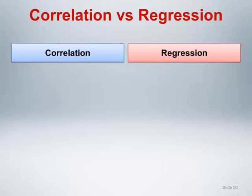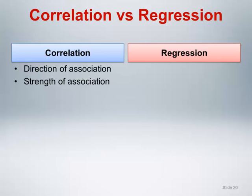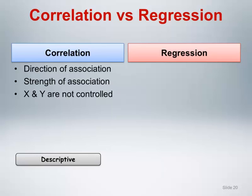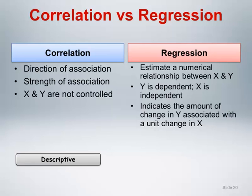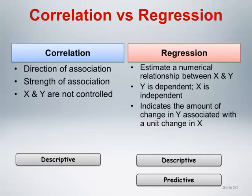We have now discussed both correlation and simple linear regression. Remember that correlation quantifies the direction and strength of the linear association between X and Y, where X and Y are not controlled variables and occur naturally, and the goal is primarily descriptive in nature. Regression is used to estimate a numerical relationship between X and Y, where Y is the dependent variable and X is the independent variable, and the goal is to use X to predict Y. The slope in regression indicates the amount of change in Y associated with a unit change in X. The goal of simple linear regression is both descriptive and predictive. That's all for now.